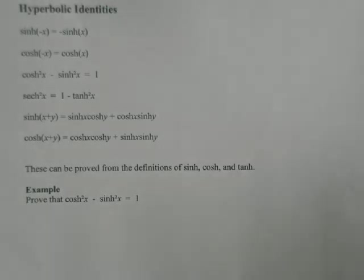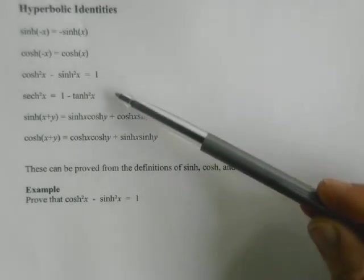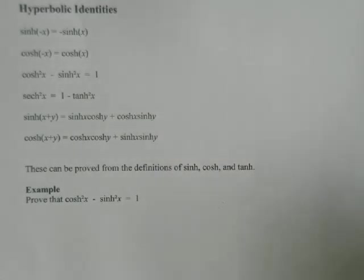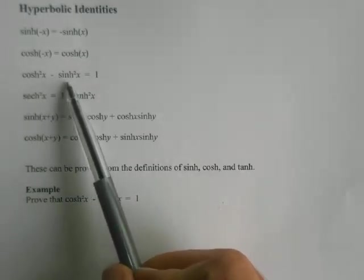Just as we have with normal trig identities, we have a whole bunch of hyperbolic trig identities. Again, you'd be given these in exams if you ever needed them. But some of them look very similar to the standard trig identities, things like cos²x + sin²x = 1.